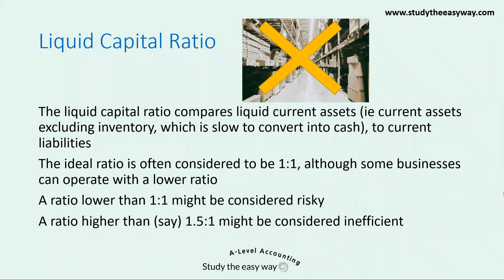The ideal ratio is often considered to be 1 to 1, although some businesses can operate with a lower ratio. A ratio lower than 1 to 1 might be considered risky, because it indicates that the business might not have enough current assets to pay its current liabilities when they become due. A ratio higher than, for example, 1.5 to 1 might be considered an inefficient use of the business's resources in terms of current assets that could be put to better use.